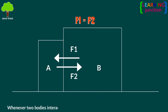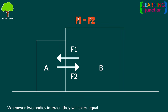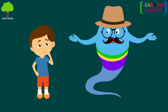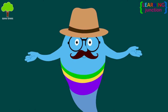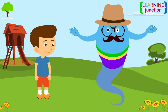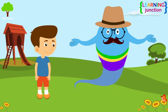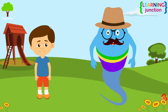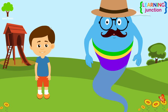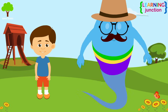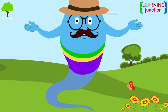Whenever two bodies interact, they will exert equal and opposite forces on each other. You look confused — let me make it easier for you. There are so many examples of Newton's third law of motion in the environment. If you observe closely, you can find it everywhere and anywhere.